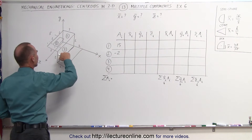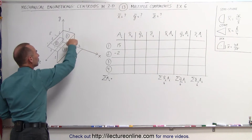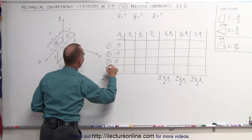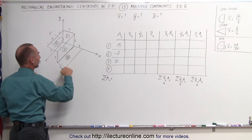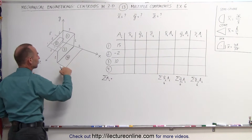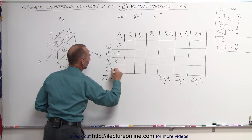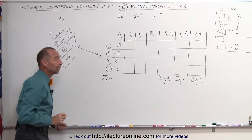For area number three, it's five units long and two units high — that's 10. And for the flat portion, area number four, it's also five by two, which is also 10. So we now have all the areas established.